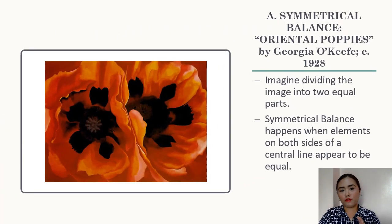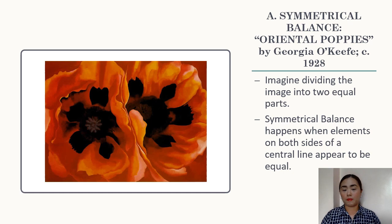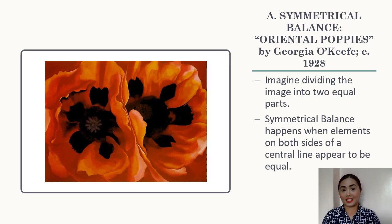There are two types of balance. The first is symmetrical balance. Our example is the painting by Georgia O'Keeffe entitled Oriental Poppies. To know if a painting is symmetrically balanced, imagine dividing the painting into two equal parts. Symmetrical balance happens when elements on both sides of a central line appear to be equal. Can you see a similar amount of elements on the left and right side?